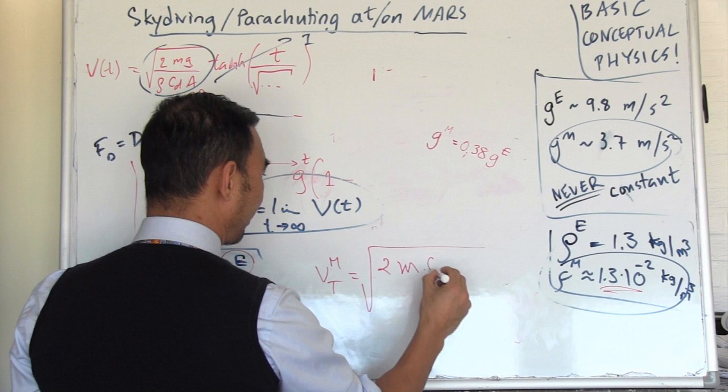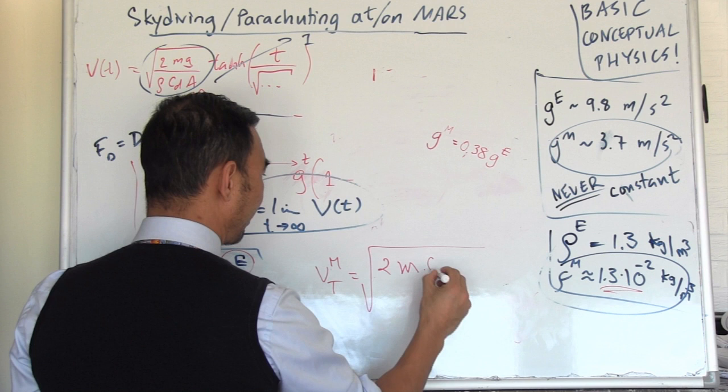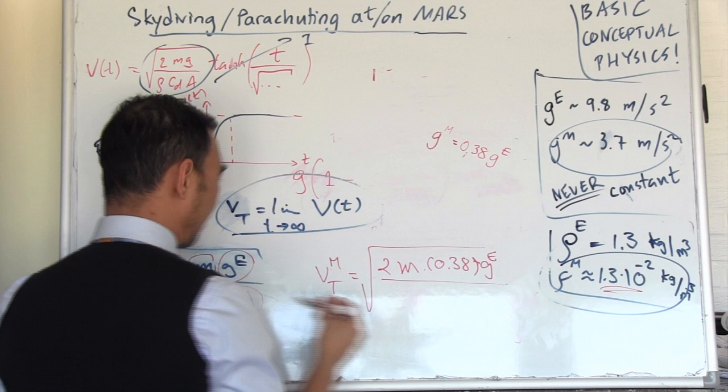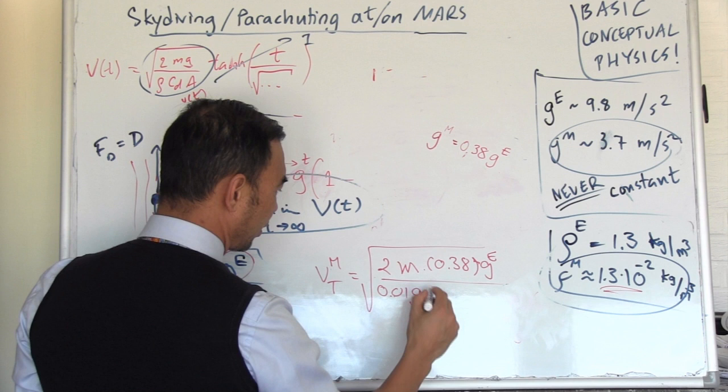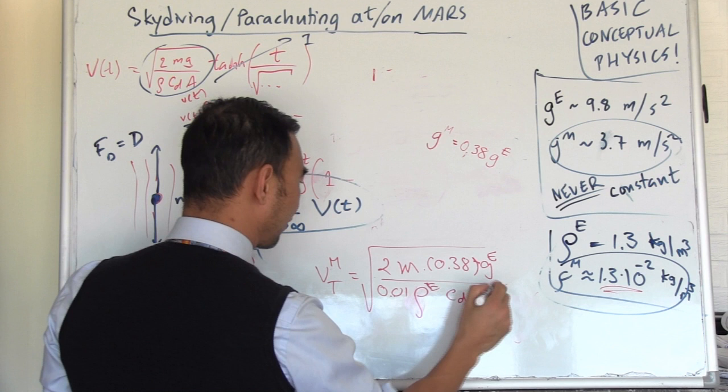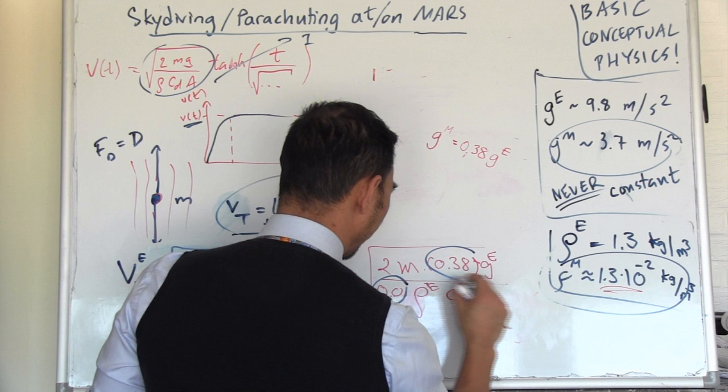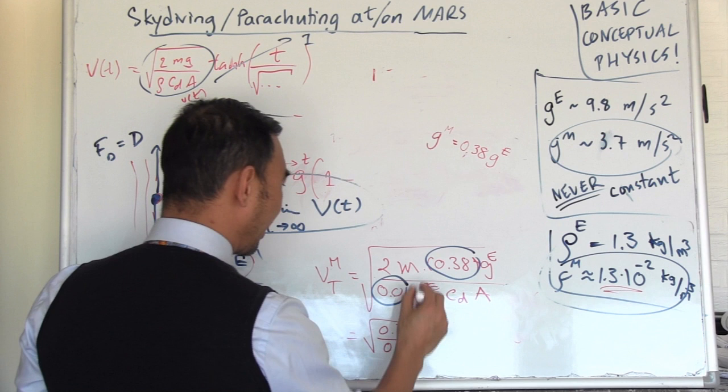If you write it as a factor, it will be the following: g on Mars would be 0.38 g on Earth. So it's only 38% of Earth's gravity. You will feel lighter if you walk on Mars, and you can easily jump, but you will be heavier due to your Mars suit. Rho on Mars would be 0.01 of rho on Earth, and then the rest is the same.